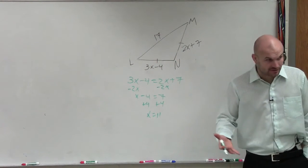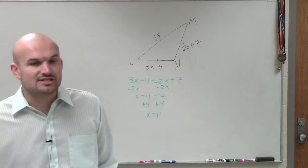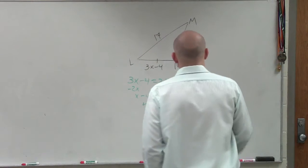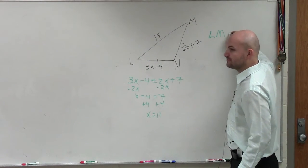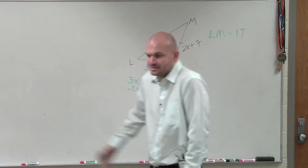Now, that's not the answer. They're not asking you to find the measure of x. The question says, find the length of each side length. Now, LM is a very easy side length to find the measurement because we're given LM, right? It's 17.